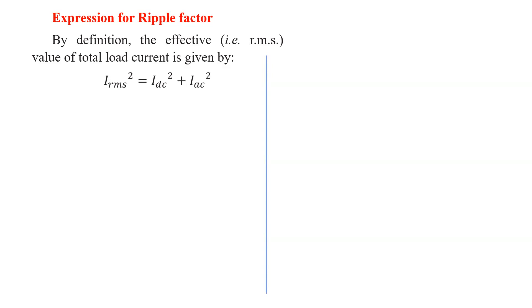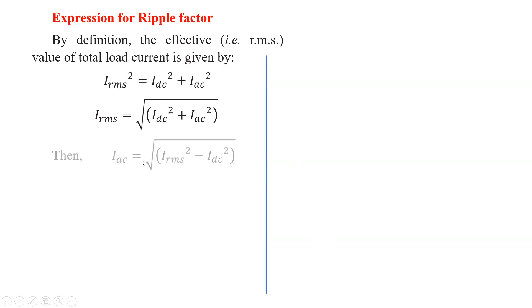Instead of taking a direct sum, we use I_rms² = I_dc² + I_ac². So I_rms = √(I_dc² + I_ac²). To find the AC component I_ac, rearranging gives: I_ac = √(I_rms² − I_dc²), where I_rms is the total RMS current and I_dc is the DC component in the output.